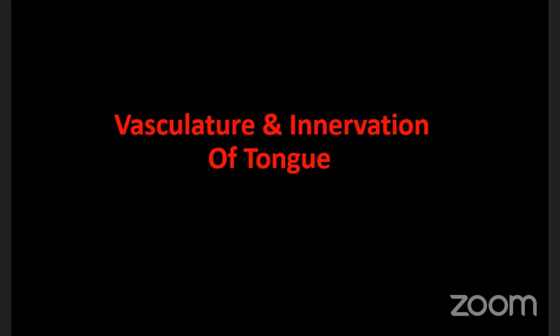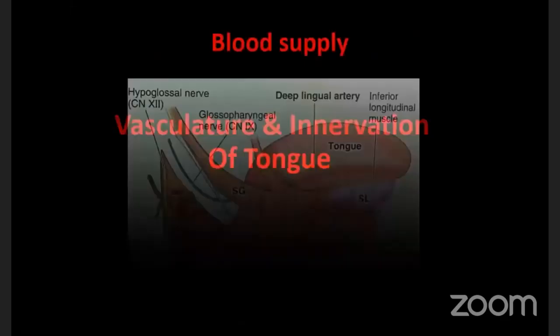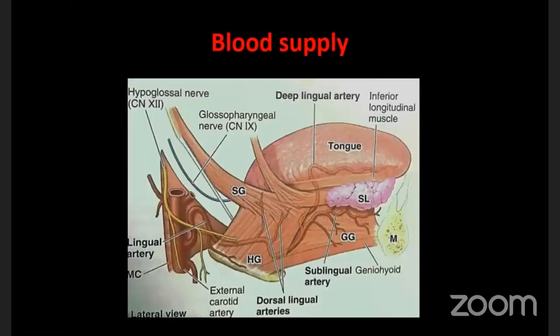To summarize the muscles of the tongue: they are divided into extrinsic and intrinsic. Intrinsic muscles are four in number, originating and inserting within the tongue itself with no bony attachment. Extrinsic muscles are also four in number with external attachment away from the tongue. Now we move on to the vasculature and innervation of the tongue.